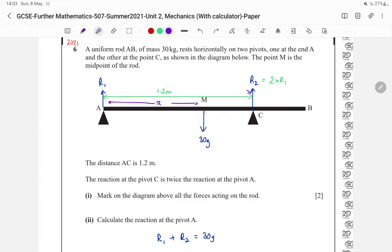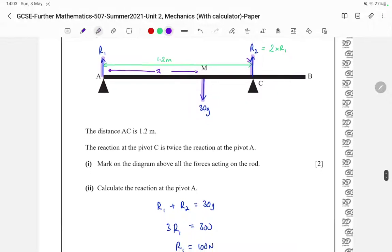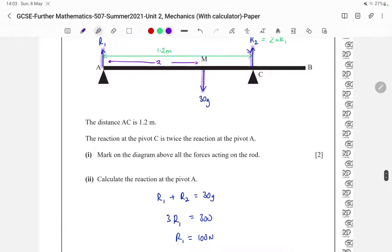The next question, calculate the reaction at pivot A. Since R1 and R2 have to equal 30g, and since R2 is twice of R1, that means that three times the reaction at A is equal to 30g. So the reaction at A is 100 newtons.